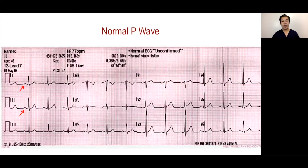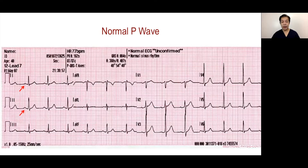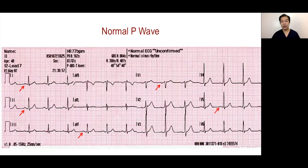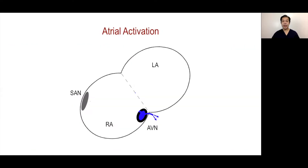So that would be lead 1, AVL, and the lateral pre-cordial leads. The generation is likewise from superior to inferior, because the sinus node is located superiorly, such that AVF would likewise record a positive deflection, and V1 will record a biphasic deflection.